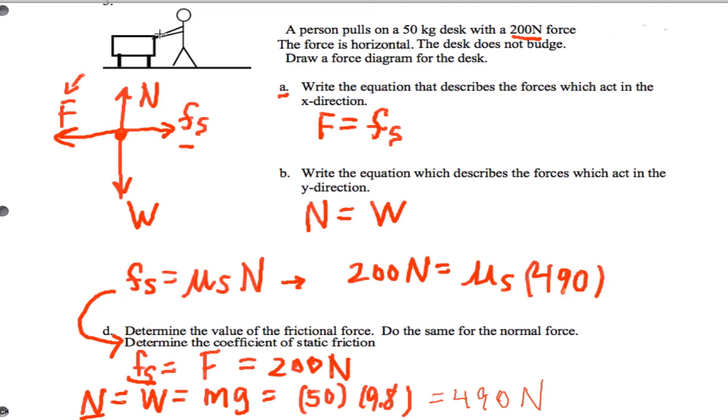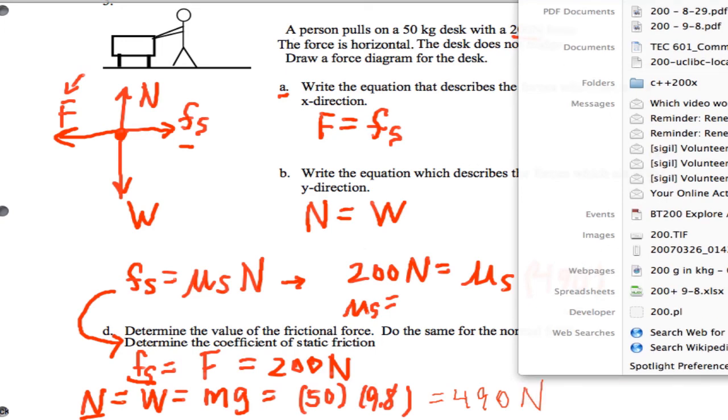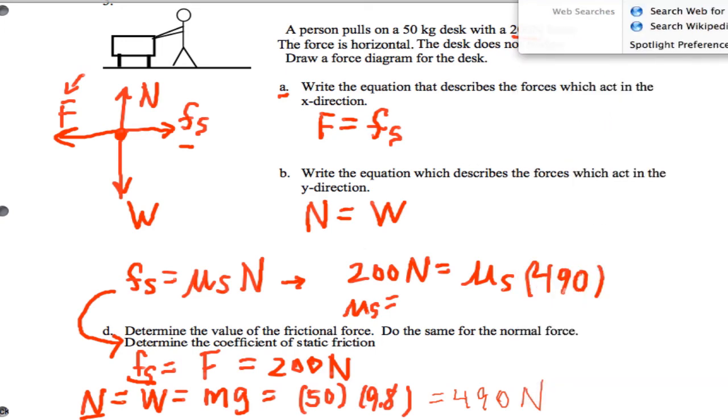Just like we did in the lab, this is the equivalent of the spring pushing, and then we use the weight to calculate the normal force, 490 Newtons. So we get mu is going to be 200 over 490. We work out mu to be 0.41.